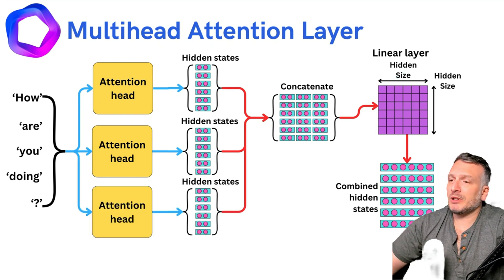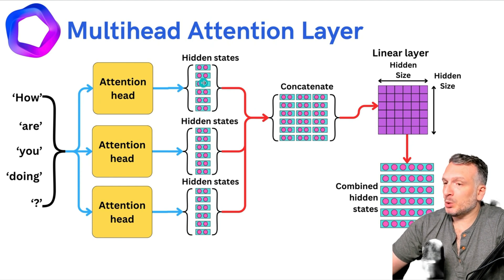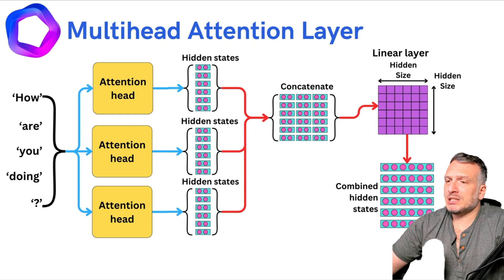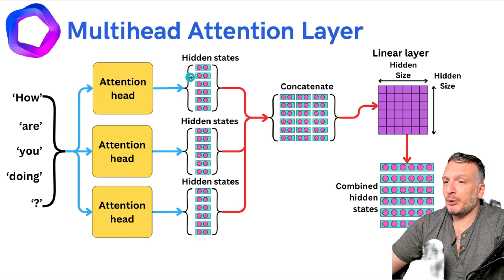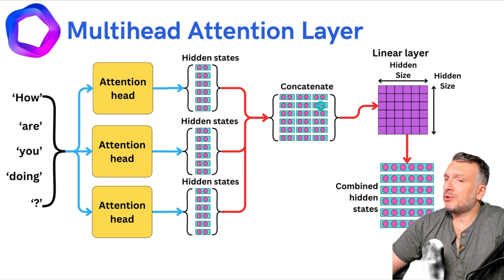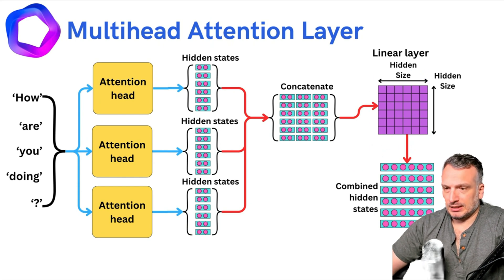Now let's assume we have three different attention heads. That means we need to decrease the size of the resulting hidden states. Here we have a size of two — we divided the size by the number of heads: six divided by three equals two. We concatenate the resulting hidden states, pass them through the output linear layer, and obtain the combined hidden states.